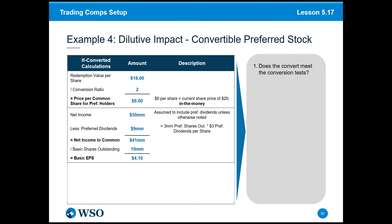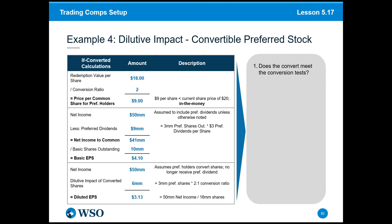If after conversion our diluted EPS is higher than the basic EPS, we wouldn't convert; if it's below, then we would. If the preferred were to convert, we would no longer subtract out the $9 million in preferred dividends, so net income to common shareholders would be the full $50 million. Dividing $50 million by 16 million shares — that's 10 million basic plus 6 million converted — gives a diluted EPS of $3.13. So it is, in fact, dilutive.